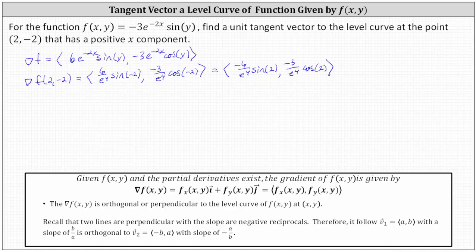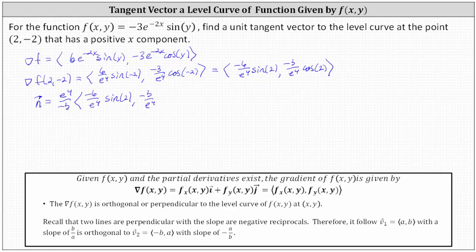So this vector is perpendicular to the level curve at the point two comma negative two. But so is any scalar multiple, so let's clear the e's from the denominator. Notice that negative six and negative three share a common factor of three, so let's let the perpendicular vector n equal e to the fourth divided by negative three times the gradient vector. Multiplying gives us an x component of two sine two and a y component of cosine two.